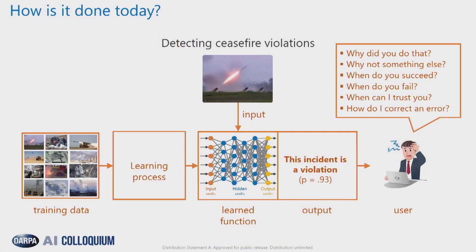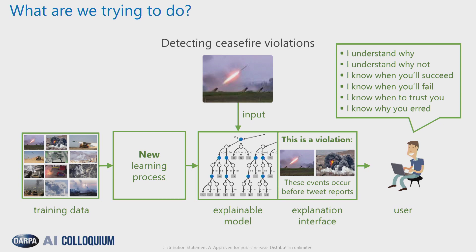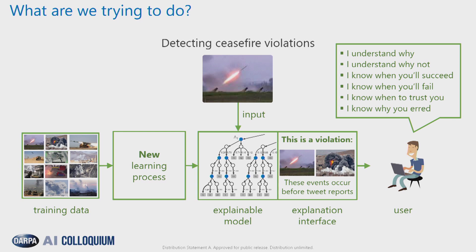Users may have many questions they'd like the system to answer, some of which are depicted in the top right-hand side. What the XAI program is trying to address is this very issue. They're trying to create a new generation of machine learning processes that instead output what we're referring to as an explainable model. Generated by the XAI performer teams, this is accompanied by their explanation interface — a user interface that allows the user to interrogate the explainable model and answer questions about why a prediction was generated, when to trust the model, and so on.